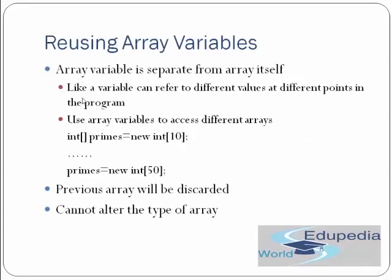Reusing array variables: array variables are separate from the array itself — a variable can refer to different arrays at different points in the program. For example, int[] primes = new int[10] and then primes = new int[50]. Initially the size was 10, but after re-assignment the size becomes 50. The previous array is discarded. You cannot alter the type of the array.